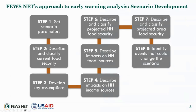I'll quickly review the eight-step scenario development methodology used for FEWS NET's early warning analysis. Step one is grounded in our knowledge of local livelihoods and how poor households typically access food and income at different times of the year. We then collect and analyze available primary and secondary data on key drivers of food insecurity to describe and classify current food security outcomes in step two. In step three, we develop evidence-based assumptions for the projection period that guide our analysis in steps four and five. Based on the analysis, we then classify the most likely household and area-level food security outcomes in the projected period using the IPC 3.1 phase classification scale.